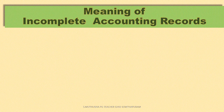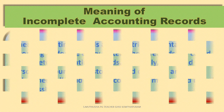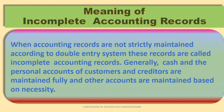Meaning of Accounts from Incomplete Records. When accounting records are not strictly maintained according to the double entry system, these records are called incomplete accounting records. Generally, cash and personal accounts of customers and creditors are maintained fully, and other accounts are maintained based on necessity.